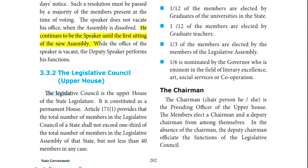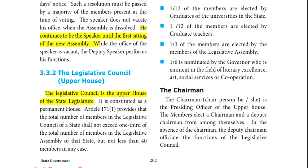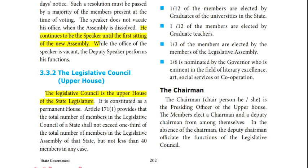MLC is the upper house of the state legislature, governed by Article 171. The total number of members in the legislative council should not exceed one-third of the total members of the legislative assembly. The minimum number of MLC members is 40.